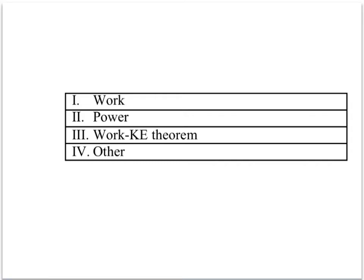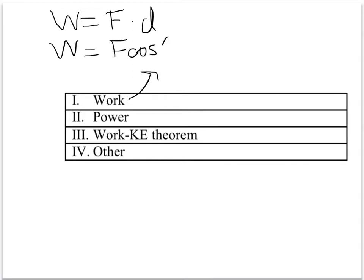Here are the topics on Monday's quiz. First, work. You should be able to calculate work using the equation work equals force times distance, and if there's an angle, work equals the force cosine theta times the distance. So if there's an angle between the force and the displacement, you have to use cosine theta to get the part of the force in the direction of the displacement.